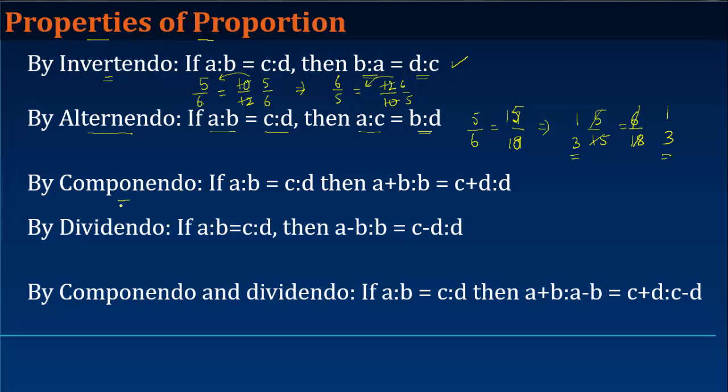Then the third property is the componendo property, which says that if a is to b is equal to c is to d, then a plus b divided by b is equal to c plus d divided by d, right. Let us say we take 3 upon 6 is equal to 4 upon 8, right. This holds true.